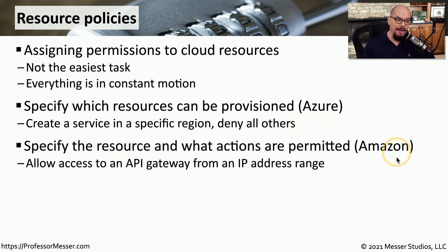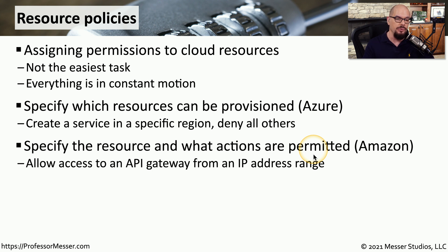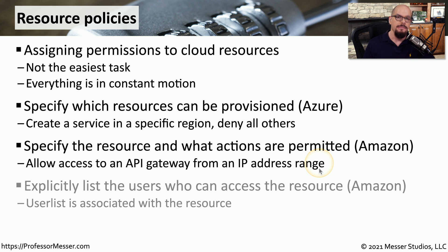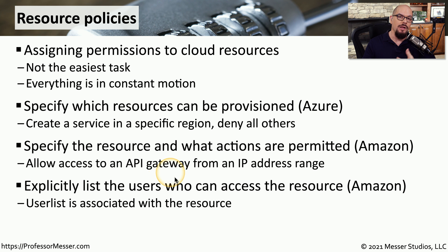A resource policy in the Amazon cloud allows someone to specify a particular resource and then determine what actions can be permitted for that individual resource. For example, you might allow access to an API gateway from a particular IP address range but deny access from any other IP addresses. Another resource policy feature of the Amazon cloud would be to allow a list of users access to a particular resource — specifying the individual users who can access an application instance and denying access to anyone else.